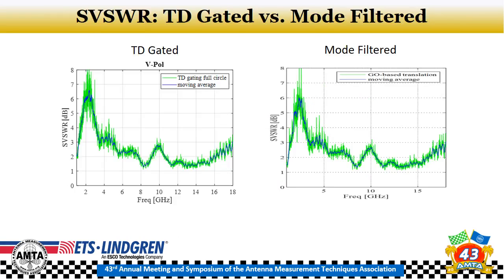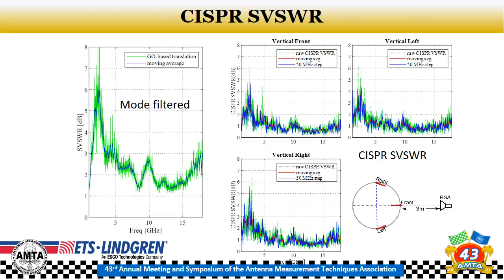This shows the time domain gated SVSWR compared to the mode filter SVSWR. Again, you can see excellent correlation between the two methods — essentially the same results whether using time domain gating or mode filtering. The third aspect of this validation study is comparing the mode filtered method to the traditional method. The left chart shows the mode filter SVSWR and the right three charts show the SVSWR using the traditional CISPR approach. Looking at the moving average, the shape is very similar. The mode filtering results are slightly more stringent because it is not undersampled as the traditional method.